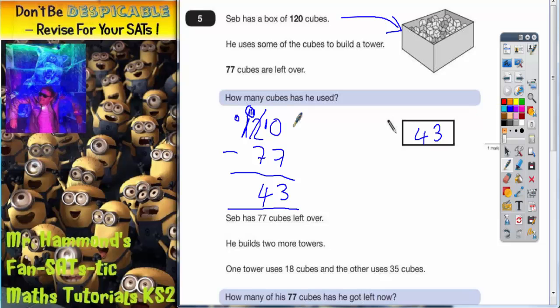Just to double check, let's just double check by adding up his 43 cubes to the 77 which are left, see if it gets back to 120.